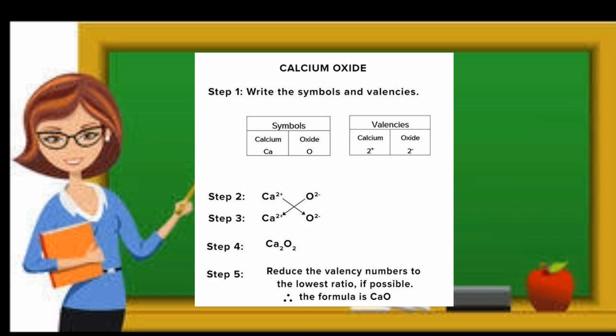Another example can be discussed: calcium oxide. Now here the symbols are shown as follows and their valencies are also written. The crossover rule is applied and we get Ca2O2.